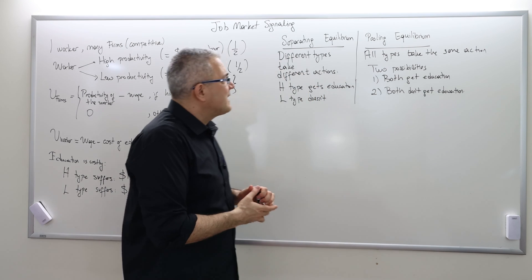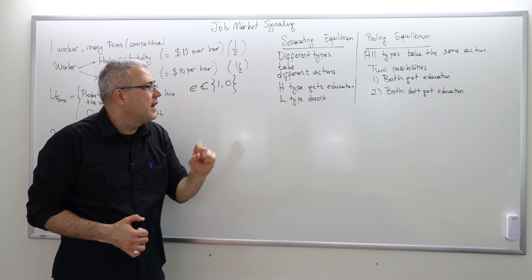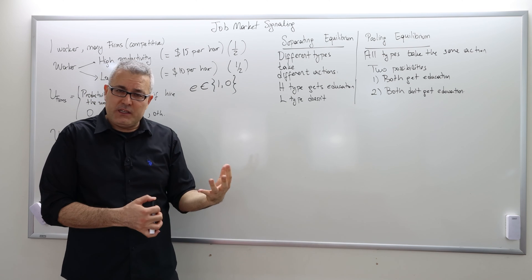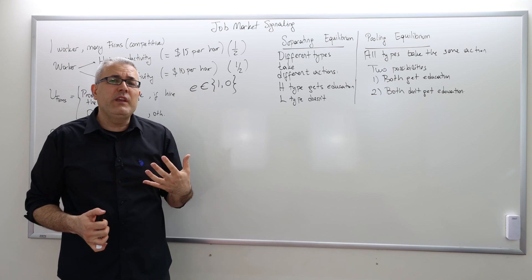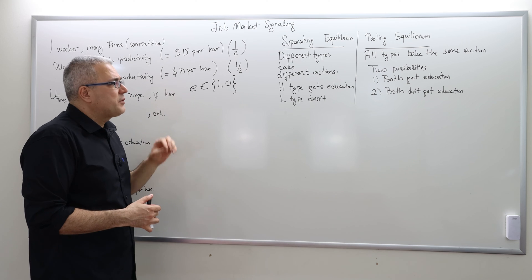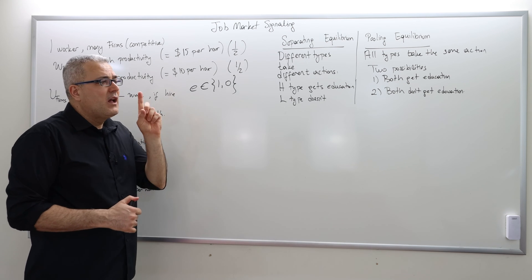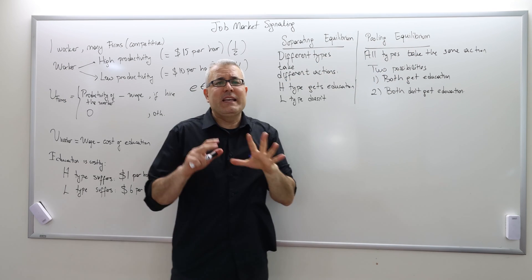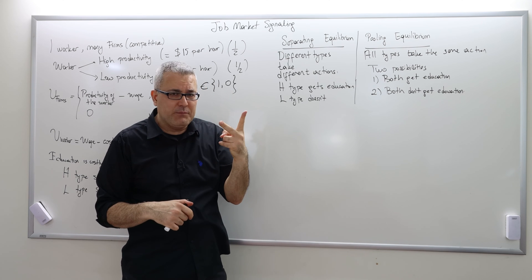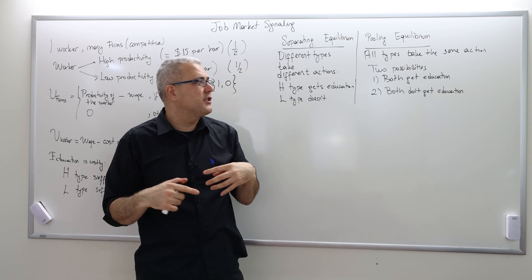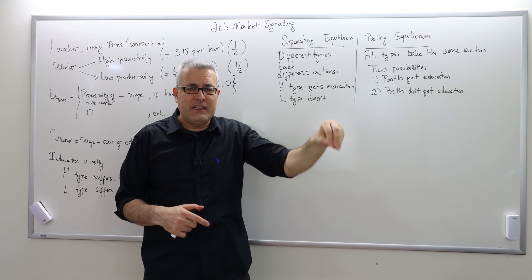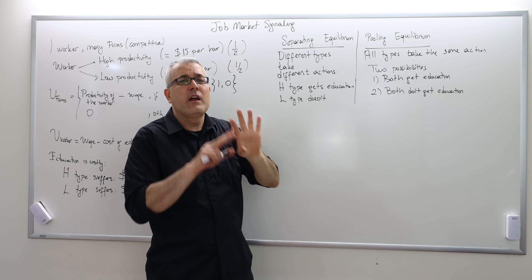Let's continue with the same model and see if we have any pooling equilibrium. Having a separating equilibrium does not mean that it's the only equilibrium. We may have a separating equilibrium, which is very desirable because the firms can actually separate, but at the same time may also have a pooling equilibrium. Pooling equilibrium is an outcome where all the types choose exactly the same action. Here we have two types and two actions: get education or not get education. So we have two possible pooling equilibria.